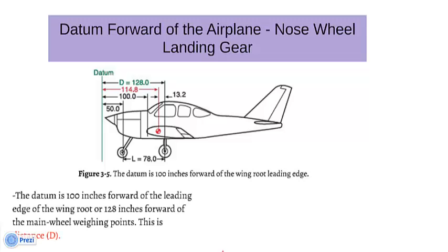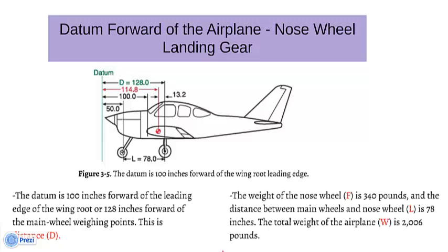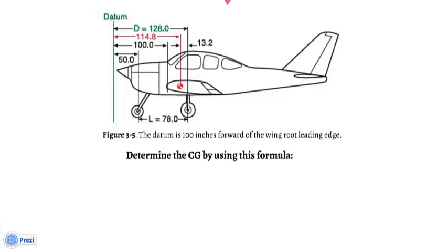The datum of the airplane in Figure 3-5 is 100 inches forward of the leading edge, or 128 inches forward of the main wheel weighing points — this is distance D. The weight of the nose wheel, F, is 340 pounds, and the distance between main wheels and nose wheel, L, is 78 inches. The total weight of the airplane, W, is 2,006 pounds. Determine the CG using this formula: CG equals D minus open parenthesis F times L, all over W, close parenthesis.